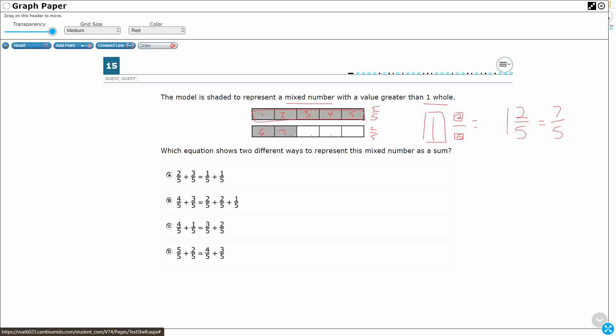This is your mixed number right here. We call this an improper fraction because it has a numerator that is greater than the denominator. Typically, we see the numerator as less than the denominator. So that's an improper fraction.